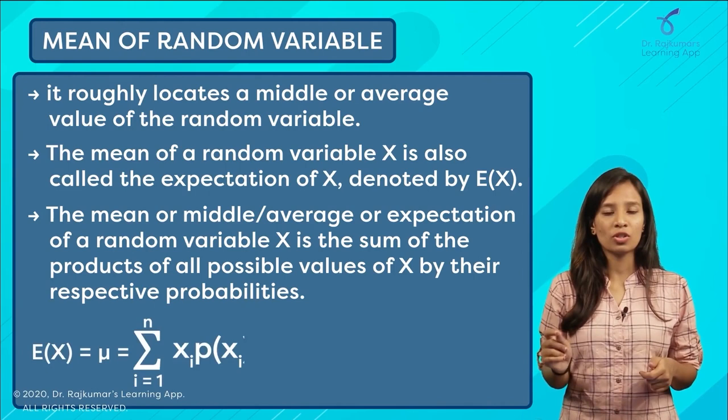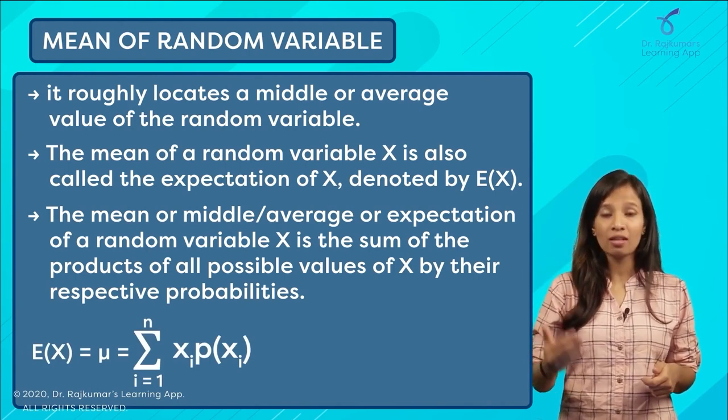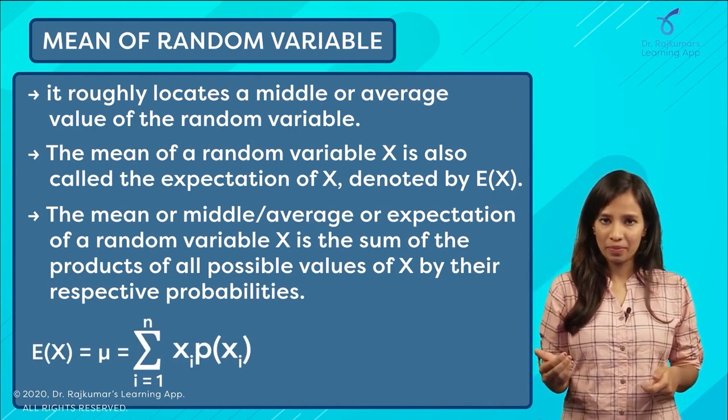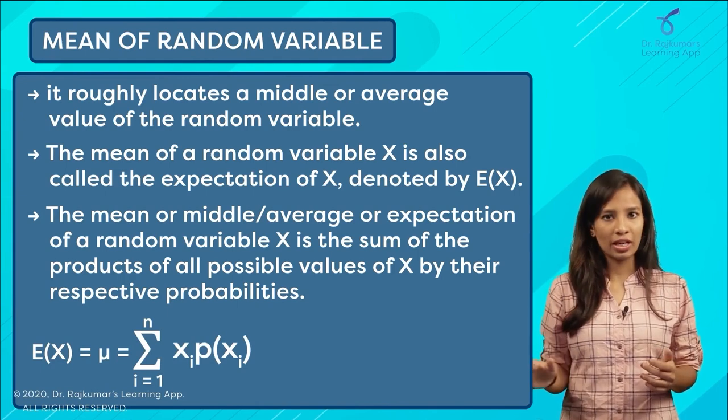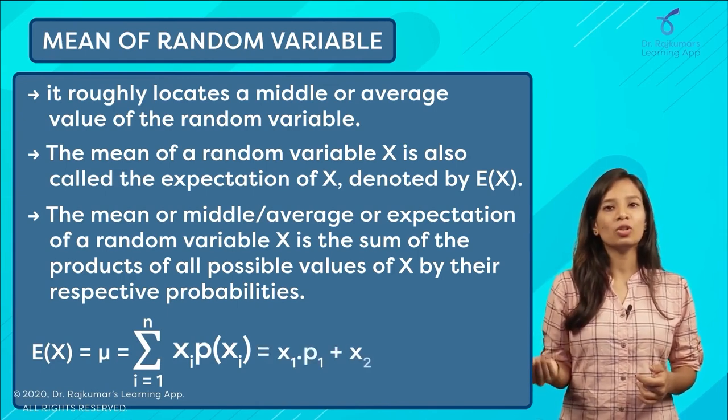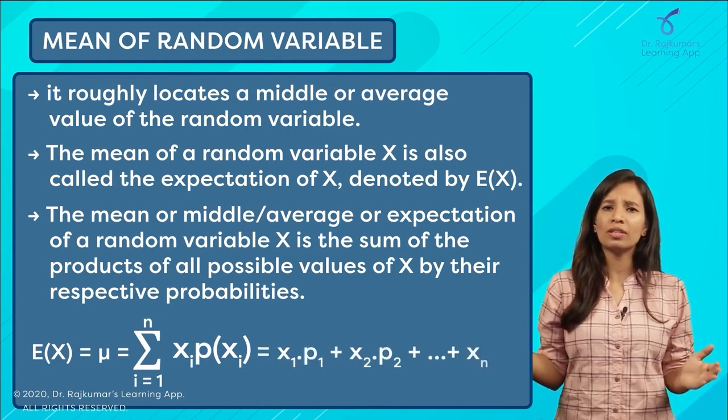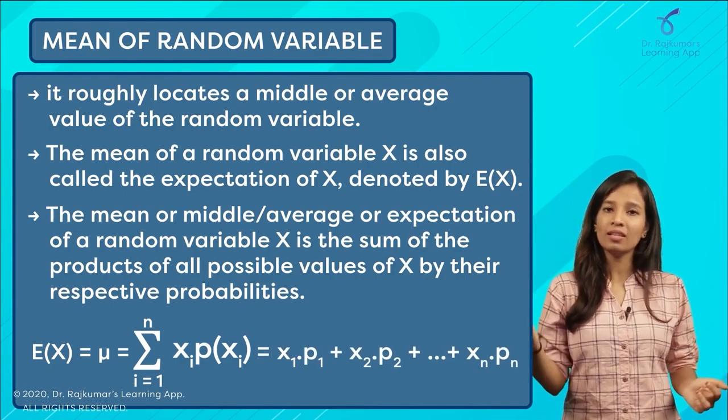summation from i equals 1 to n of x_i times p(x_i). We can further write it as x₁ times p₁ plus x₂ times p₂ and so on, till however many you have, that is x_n times p_n.